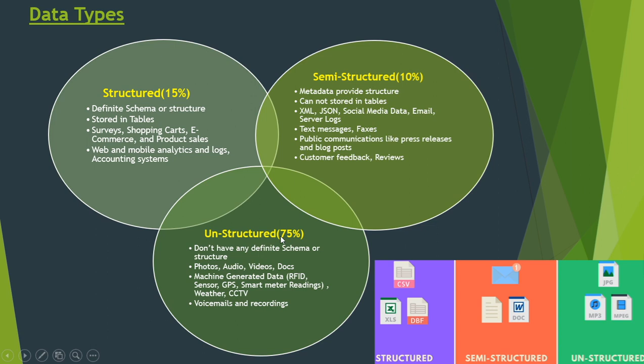Semi-structured data is not as easy to process or store as structured data. Unstructured data is about 70 percent of total data and does not have any definite schema or structure — like books scattered and not organized. Examples include photos, videos, audios, and documents shared on social media. Machine-generated unstructured data includes RFID — radio frequency identification — tags, toll tags, sensors, GPS data, smart meters, CCTV, weather data, voicemail, and recording data.